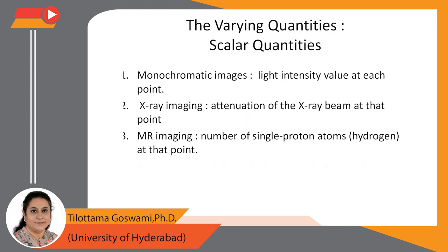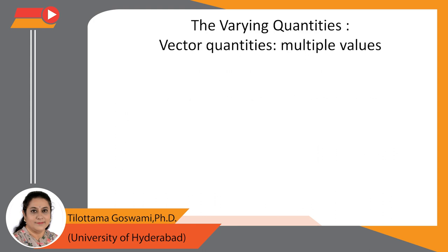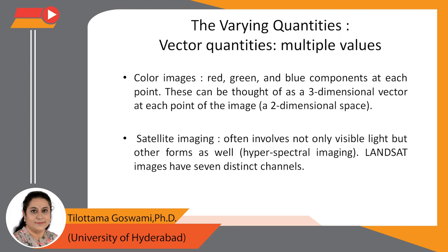Range images represent the distance to the nearest object at that point. There are also vector quantities present at a point in 2D space (x, y). The vector quantities can be a three-dimensional vector in the case of color images, where we have red, green, and blue components. In satellite imaging or hyperspectral imaging, it not only involves visible light but other forms of the electromagnetic spectrum. One example is Landsat images, which has seven distinct channels.